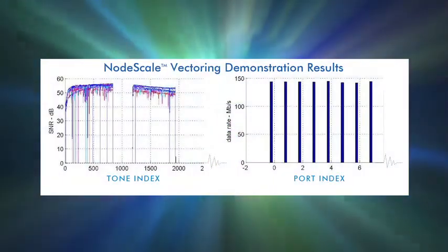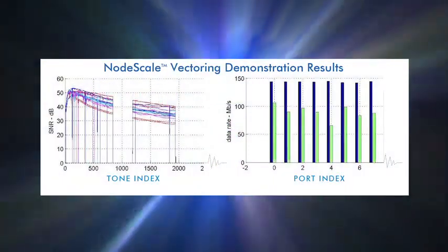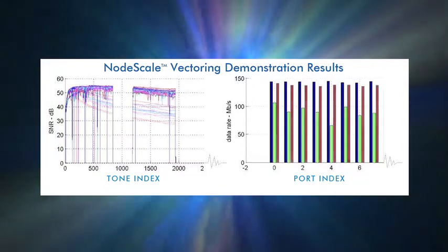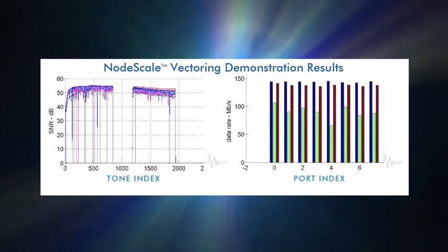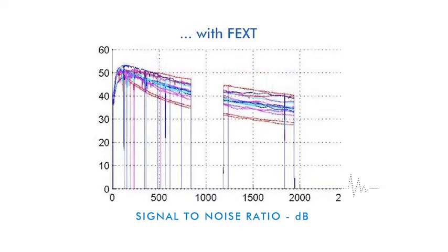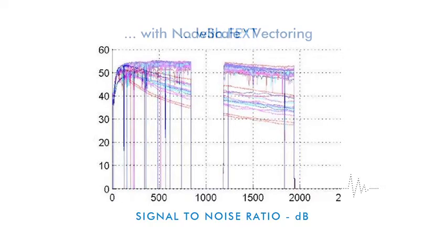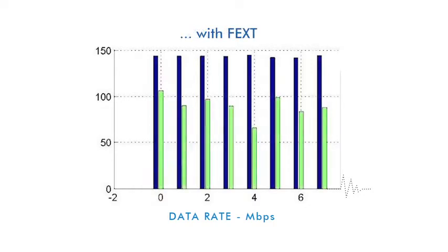The readout shows where crosstalk in our testware is occurring, and how node scale vectoring is cancelling it out. The waterfall shows how we're improving the signal-to-noise ratio and eliminating crosstalk. The bar chart shows the relative improvement of broadband performance that's possible as a result.